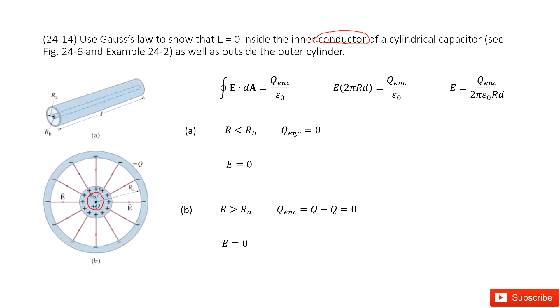And in this case, the enclosed charge equals zero. Because we see the conductor charges distributed at the surface. In this case, R is smaller than Rb. So inside this Gaussian surface, enclosed charge is zero. So E equals zero.